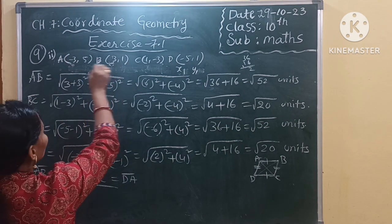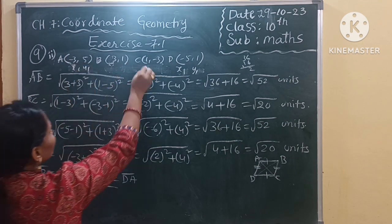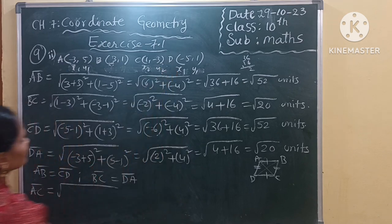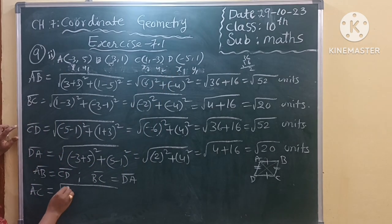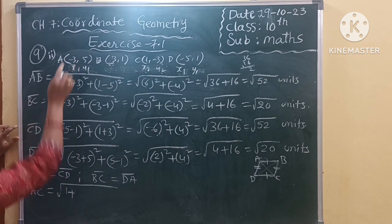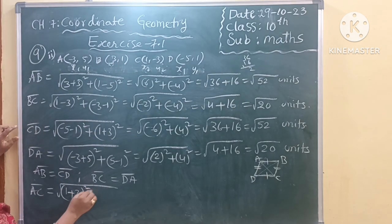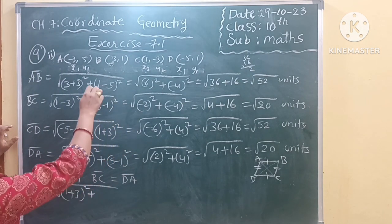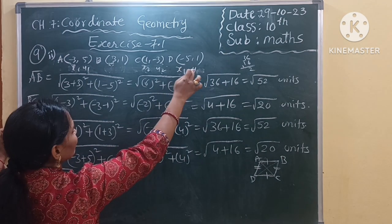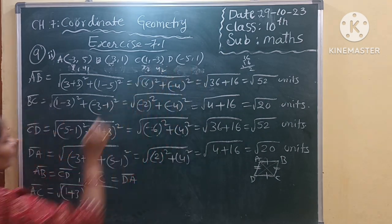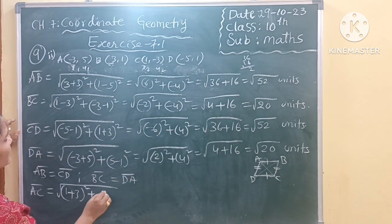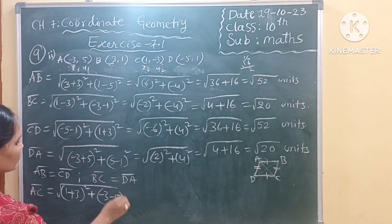So if you are talking about AC, X1 Y1, X2 Y2. So X2 minus X1 whole square plus Y2 minus Y1. So here 1 plus 3, Y1 minus 4.